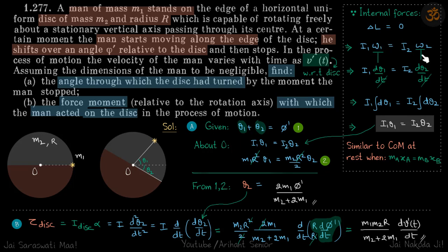Change in angular momentum must be zero. So i1 omega 1 equals i2 omega 2. Omega 1 can be written as d theta 1 by dt, omega 2 is d theta 2 by dt. I'm just neglecting the signs now. So i1 integral d theta 1 equals i2 integral d theta 2, or i1 theta 1 equals i2 theta 2.